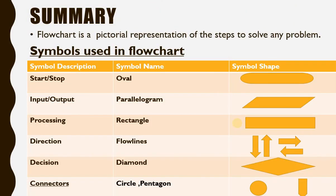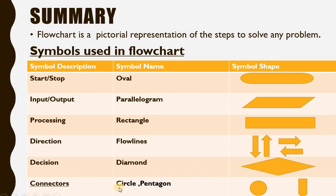Now look at the summary of what we have learned in this video. A flowchart is a pictorial representation of the steps to solve any problem. Start and stop are represented by the oval symbol, input and output by the parallelogram, processing by the rectangle, direction of flow by flow lines, decision by the diamond symbol, and connectors by the circle and pentagon.